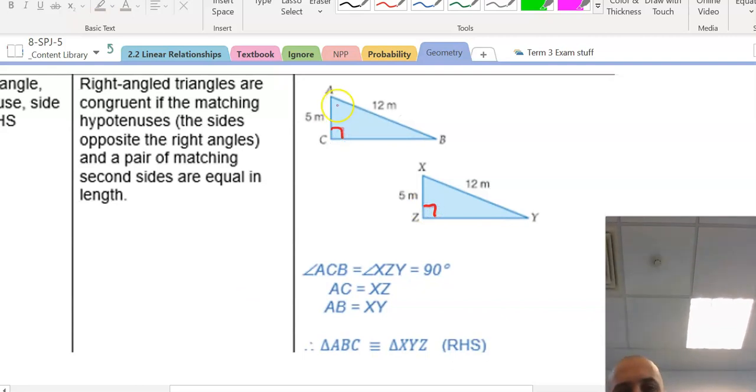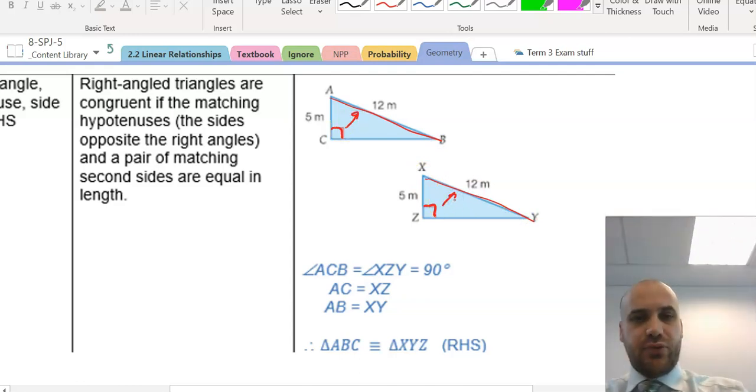Great. We can see that the hypotenuses, the longest sides, the ones that are opposite the right angle, they're equal as well. They're both 12. And finally, we can see some other side, 5 and 5, they are congruent. So, the shape itself is congruent.